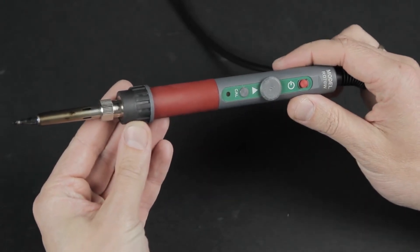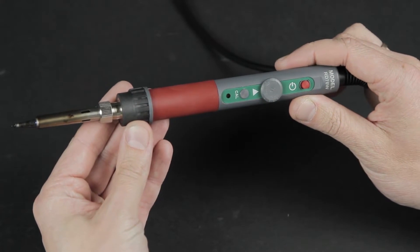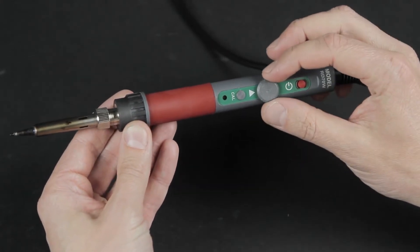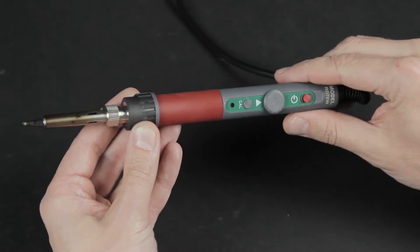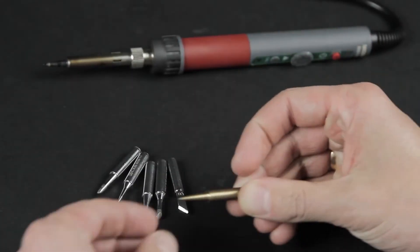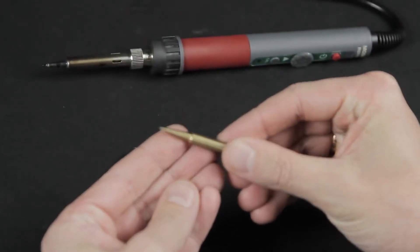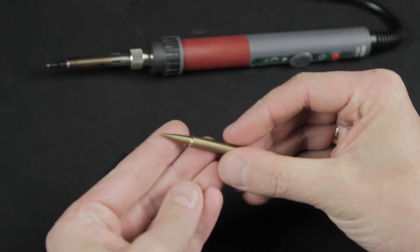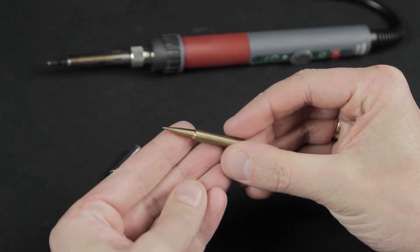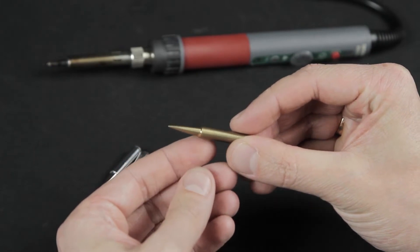This soldering iron has interchangeable tips, which means that depending on the task at hand, you can use tips of different shapes and configurations. There are copper tips. They have very good thermal conductivity.